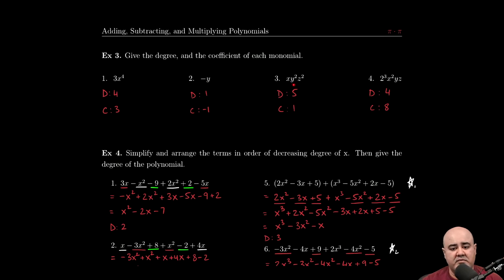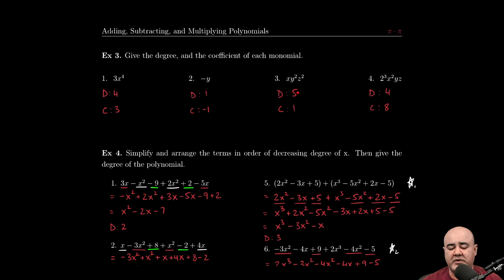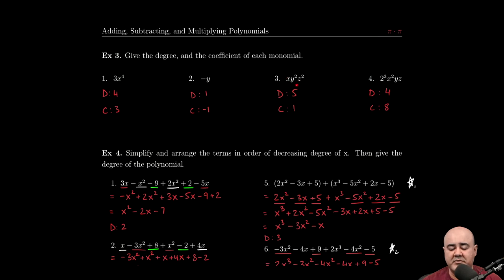A lot of times students will think this is not a monomial because we have multiple variables. That's not the case. A monomial can be a product of a number and a bunch of variables. As long as all of these are being multiplied, this is indeed a monomial. If we add up all the degrees of the variables, we have 2 plus 2 plus 1. That gives us the degree of the monomial. So the degree is 5.